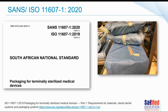ISO 11607 part one covers the requirements for the materials used to make sterile barrier systems, as well as the requirements of sterile barrier systems themselves once formed, and packaging systems as a whole. Part two is all about the validation requirements for forming and sealing. In South Africa, the 2019 version was adopted as SANS 11607 part one in 2020, and it's available for purchase on the South African National Bureau of Standards website. If you're involved in procurement or decision-making about these products, it would be important to have a copy.